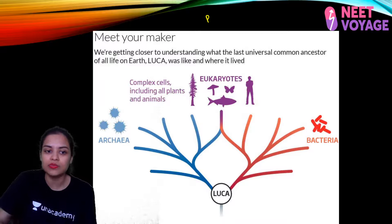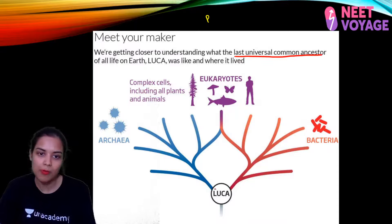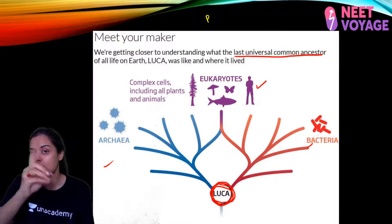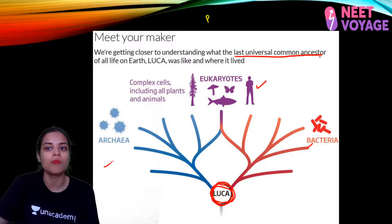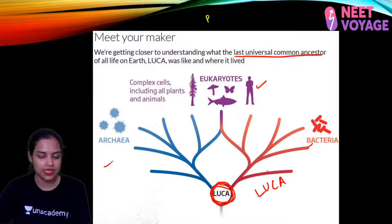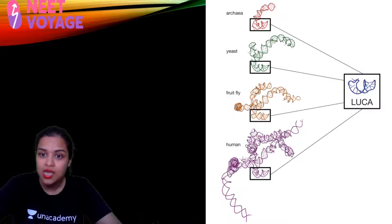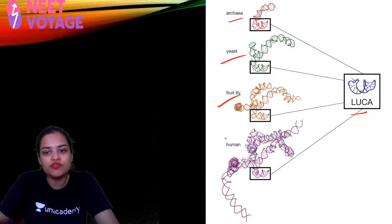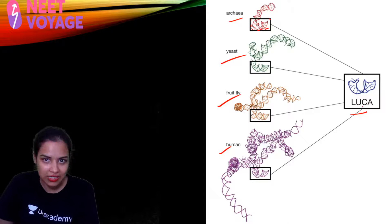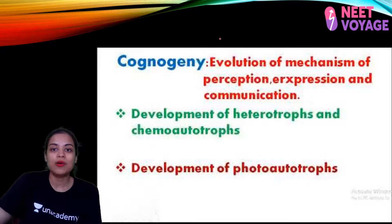Since prokaryote gave rise to archibacteria and then eukaryote formed, there is something called the Last Universal Common Ancestor — LUCA. We, being a mammal, bacteria, or archibacteria — all have a common ancestor. We are all sharing a common type of gene called LUCA. Whether it is archibacteria, yeast, fruit fly, or human — in all of them some part of the gene matches with LUCA, the last universal common ancestor.